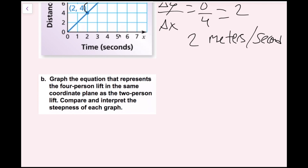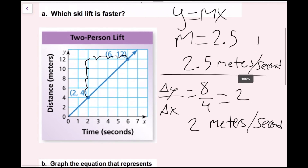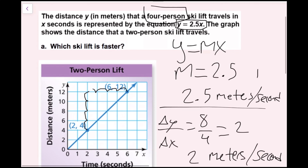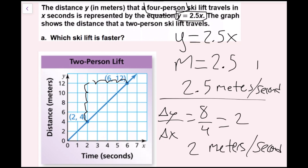I'm going to graph it on this graph. Since y equals 2.5x is in the form y equals mx, I know it's proportional, so right away I'm going to plot the origin because all proportional relationships have the point (0, 0) on them.